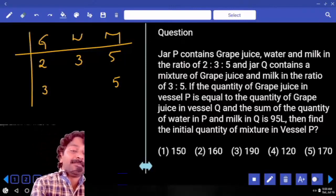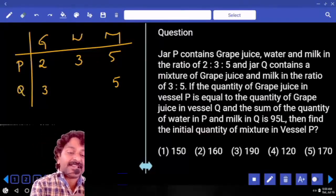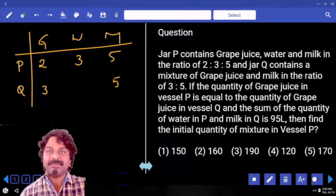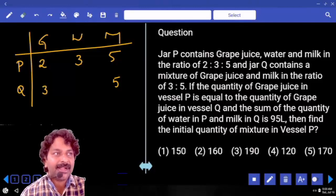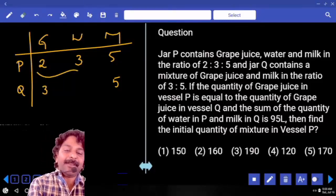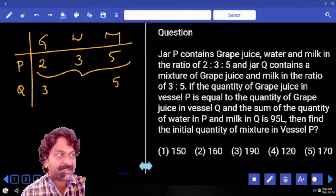grape content must be same in both the containers, correct. In P, how many parts we have? 2. In Q, both should be same according to the condition. So let's multiply first ratio with 3,